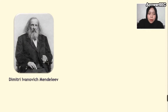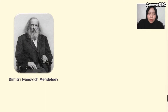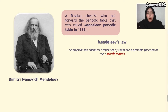After the failure of the Newlands Octaves, Dmitry Ivanovich Mendeleev, a Russian chemist, put forward a periodic table called the Mendeleev Periodic Table in 1869. It stated that the physical and chemical properties of elements are periodic functions of the atomic masses. Mendeleev believed that atomic mass is the reason why elements are arranged in the periodic table.